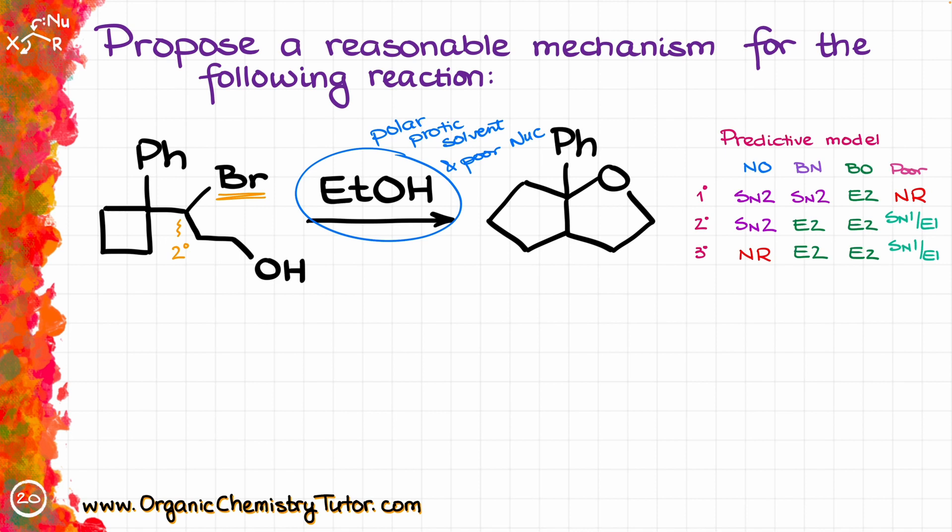When it comes to our predictive model, I'm going to remind you that we can have different types of reagents: nucleophile only, base slash nucleophile, base only, and poor base and nucleophile, which is exactly the situation we have now. The position of our leaving group can be primary, secondary, or tertiary.